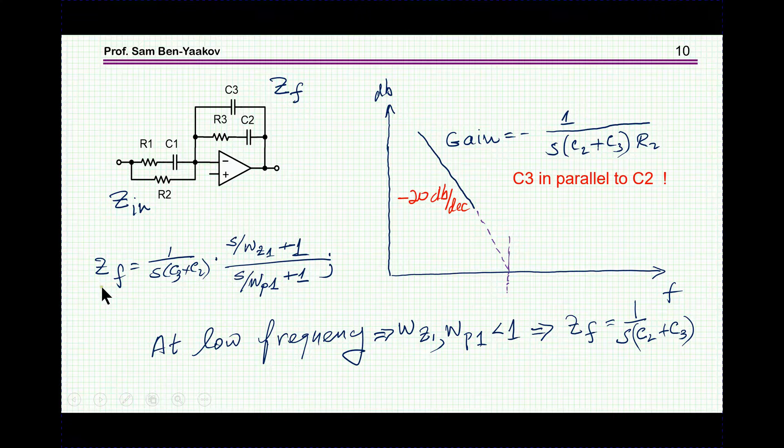So the gain will be ZF over Zin. Now we have found that ZF is 1 over S times C2 plus C3. And then we have a zero and a pole. Now at low frequency, we are below the zero and below the pole. So therefore, these are smaller than one. And consequently, we are left with this expression here. This is for the impedance. This is not the location of the pole. This is just the impedance of this branch at low frequency.